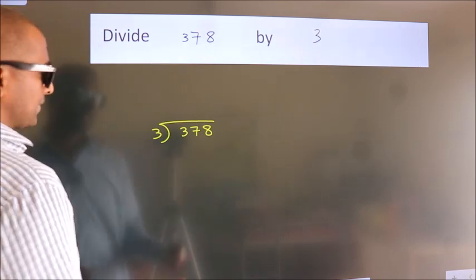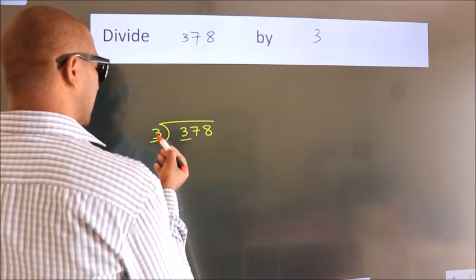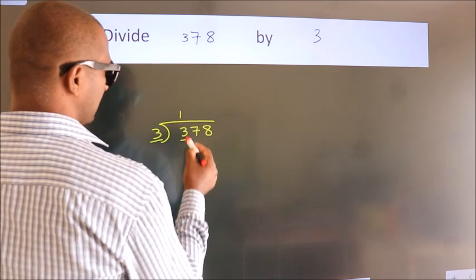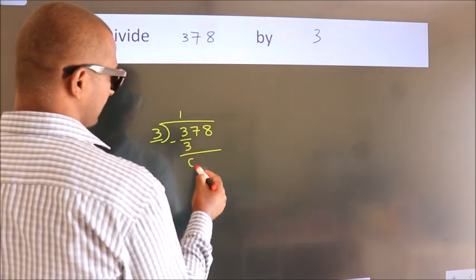Next, here we have 3, here 3. When do we get 3? In 3 table, 3 once is 3. Now we should subtract. We get 0.